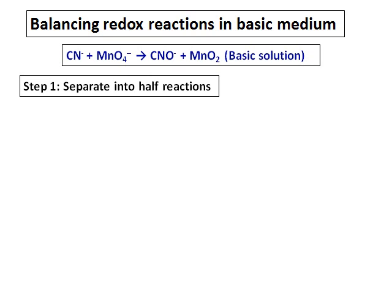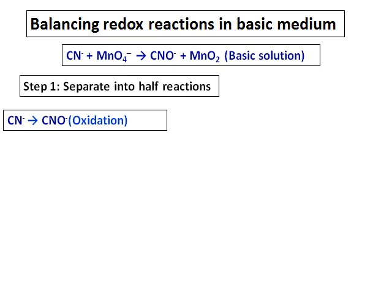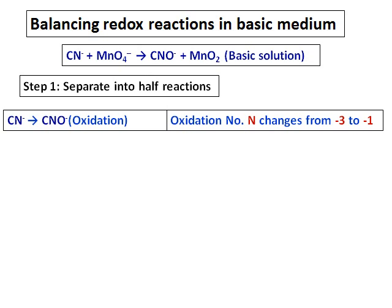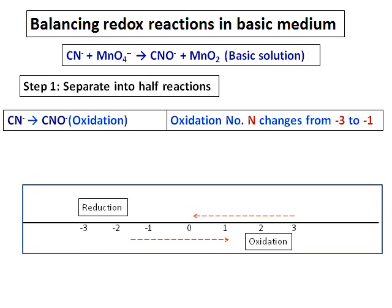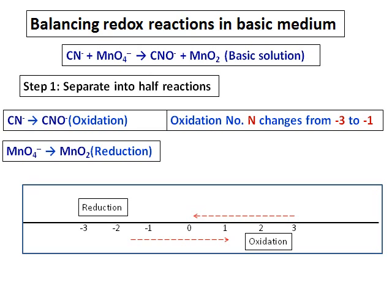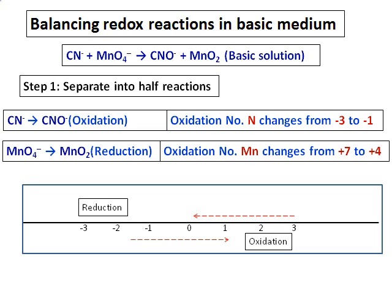So, the first step is to separate them into half reactions. We have the cyanide becoming CNO-, and if you look at the oxidation number, nitrogen changes from -3 to -1, and therefore this is oxidation. And for your reference, I have given you the number line. And in the second half reaction, MnO4- changes to MnO2, where the oxidation number of manganese changes from +7 to +4, and this is reduction.